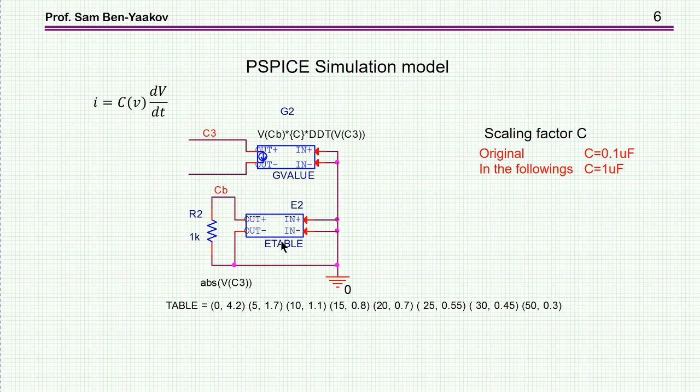I'm generating this value here by a table. E-table is a table. The table has an input. This is the input to the table, what is affecting the output. And this is the absolute value of C3, the voltage of C3, again, assuming this is ground. This is going to be a function of the voltage across the capacitor. Absolute, because the capacitance is changing for positive and negative voltage the same.